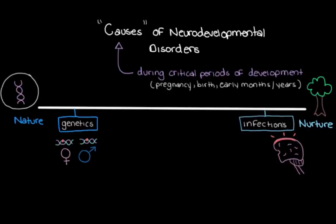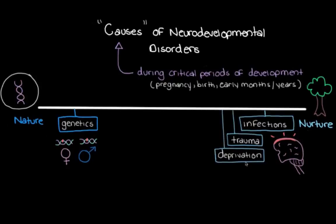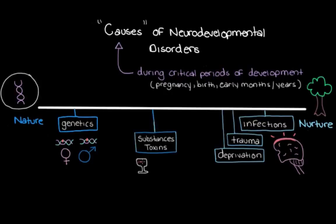Jumping back to our spectrum, on the nurture end let's add trauma — something like head trauma from a car accident or a fall — and deprivation, such as temporary hearing loss during the first few years of life, maybe from recurrent ear infections in infancy or toddlerhood. In the middle of our spectrum are things that happen before birth but are due to the fetal environment, like exposure to certain substances or toxins — for example, if mom drinks alcohol or smokes cigarettes while pregnant.